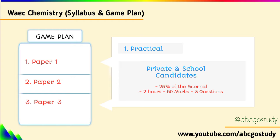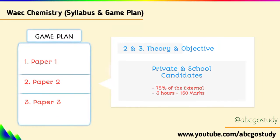Those 3 questions are compulsory — you need to do all of them correctly; you cannot pick only part of those questions. Similarly, Paper 2 covers both theory and objective. Collectively, Paper 2 — comprising theory and objective — will be 75% of your grade, done in 3 hours with a total mark of 150 marks.